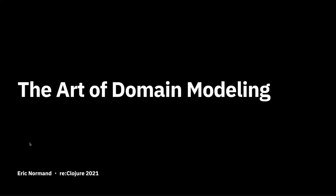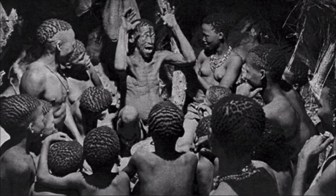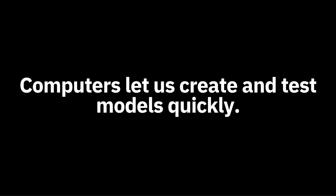I believe that modeling the world is a human way to understand how things work. From the beginning of humanity, we have created models. We imagine what an animal might do so that we can better hunt it. We tell stories about situations so we can learn from experiences we never had. We use science to develop models of many aspects of the world, and now we have computers to build and test models very quickly.